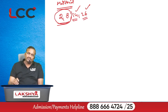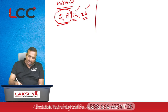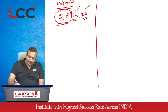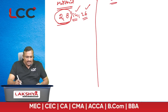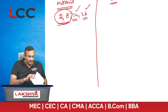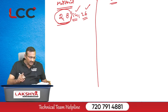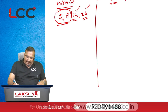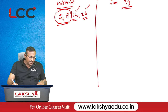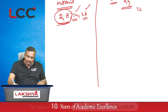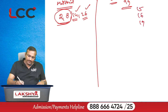From the CMA study material, similar questions are on page number 99: question number 15, question number 16, and question number 19.